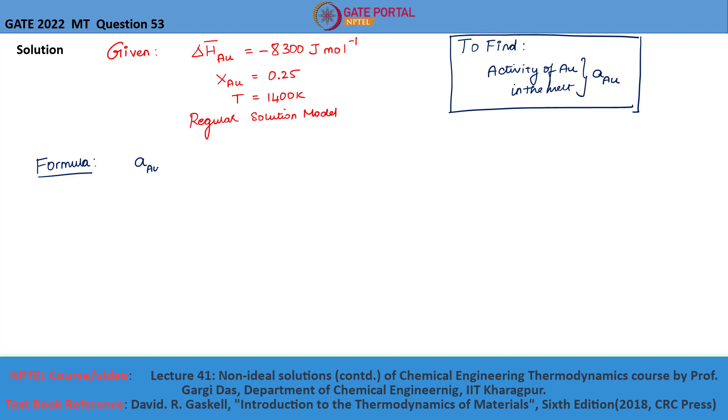Activity of gold, a_AU, is equal to gamma_AU multiplied by X_AU, where X_AU is the mole fraction of gold and gamma_AU is the activity coefficient.